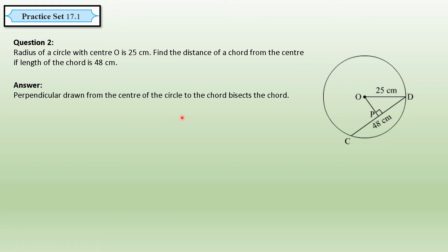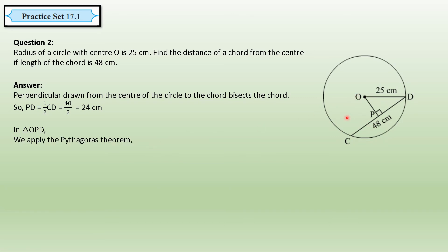Since OP bisects chord CD, the length of PD is half of CD, which is half of 48, giving 24 centimeters. Now in triangle OPD, angle P is 90 degrees. We apply the Pythagorean theorem: OP² + PD² = OD², where OD is the hypotenuse. OD is the radius of the circle and we need to find OP.